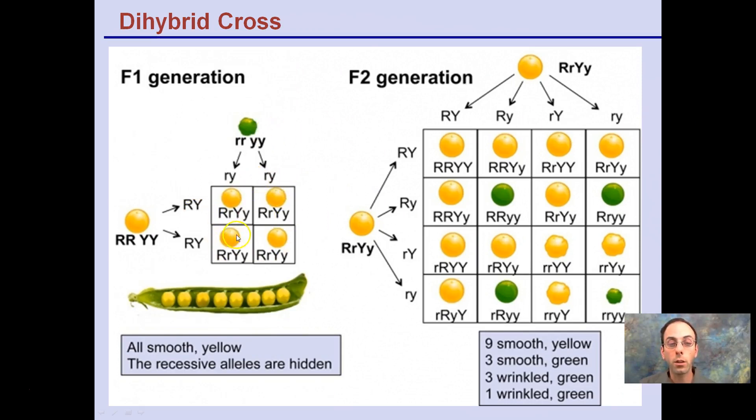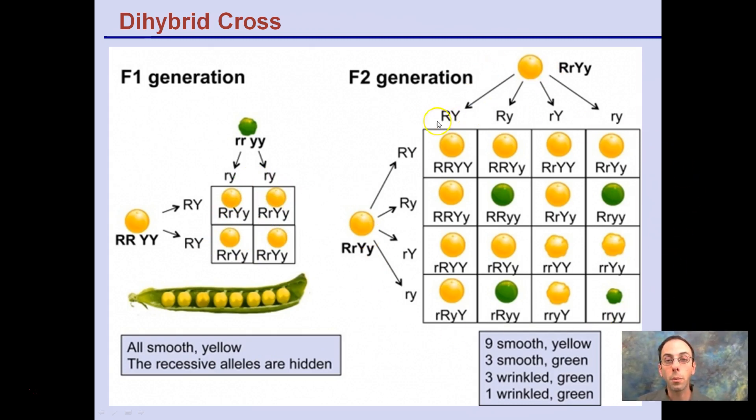This is putting it all together in a dihybrid cross. Here we have the initial generation, the F1. We take two of these individuals, we want to cross them together, and that's where it gets a little bit more confusing. And that's where we get to this 4x4.